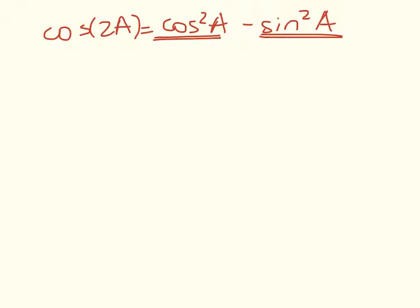Okay, so last one we had cosine of 2A is equal to cos squared A minus sin squared A. But this time we're going to substitute in here. So we have cos squared A minus now sin squared A is 1 minus cos squared A. So that equals 2 cos squared A minus 1.